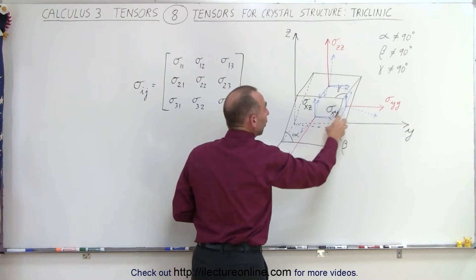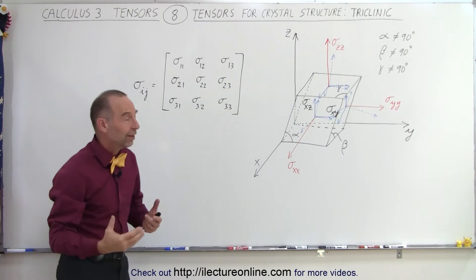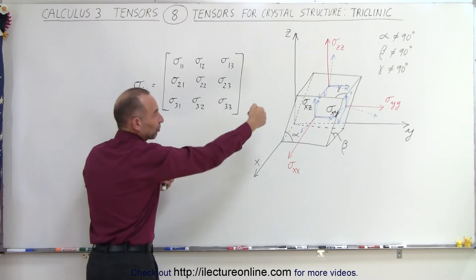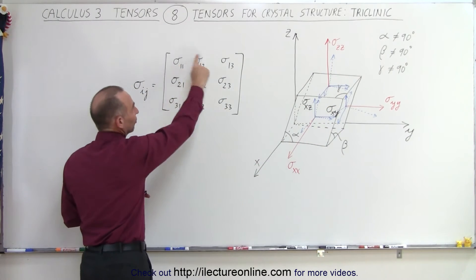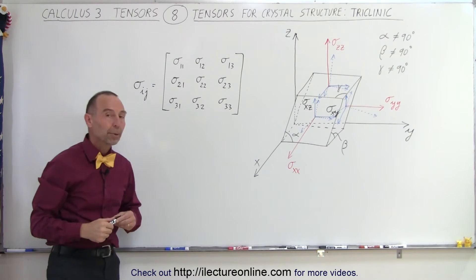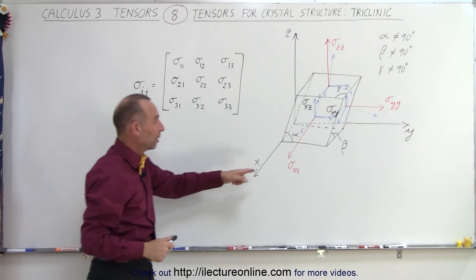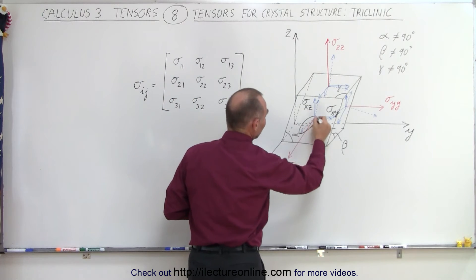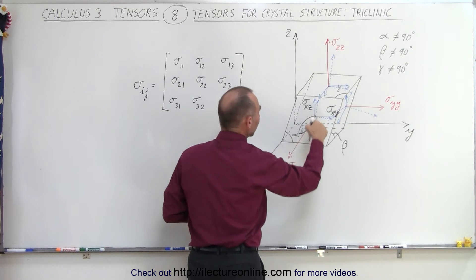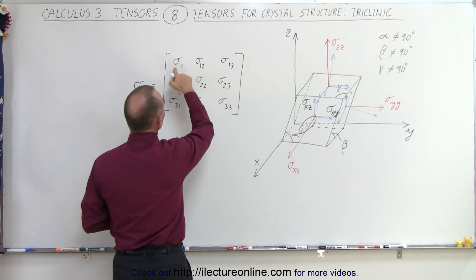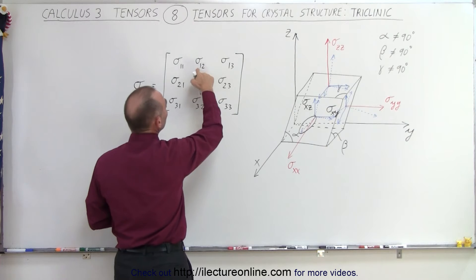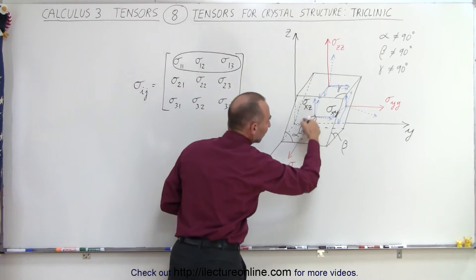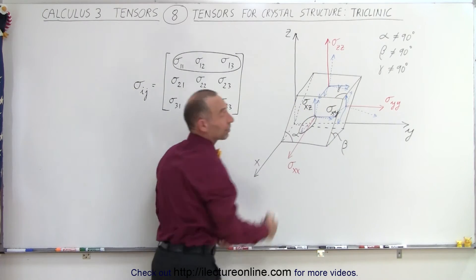That would be the case for any one of the three surfaces, so therefore we need all nine components in order to represent any vector that's perpendicular to any one of the three surfaces. If you want to represent the vector which is perpendicular to this plane, you're going to need all three components: sigma 1-1, sigma 1-2, and sigma 1-3.